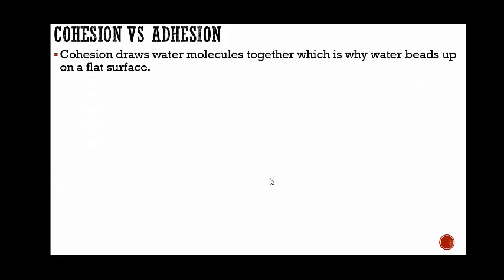Cohesion draws water molecules together, which is why water beads up on a flat surface. If you're driving down the road, you may see raindrops hitting your windshield and they start to bead together. They don't just splatter. When rain hits the leaves, it starts to bead up together. You see all these beads of water.